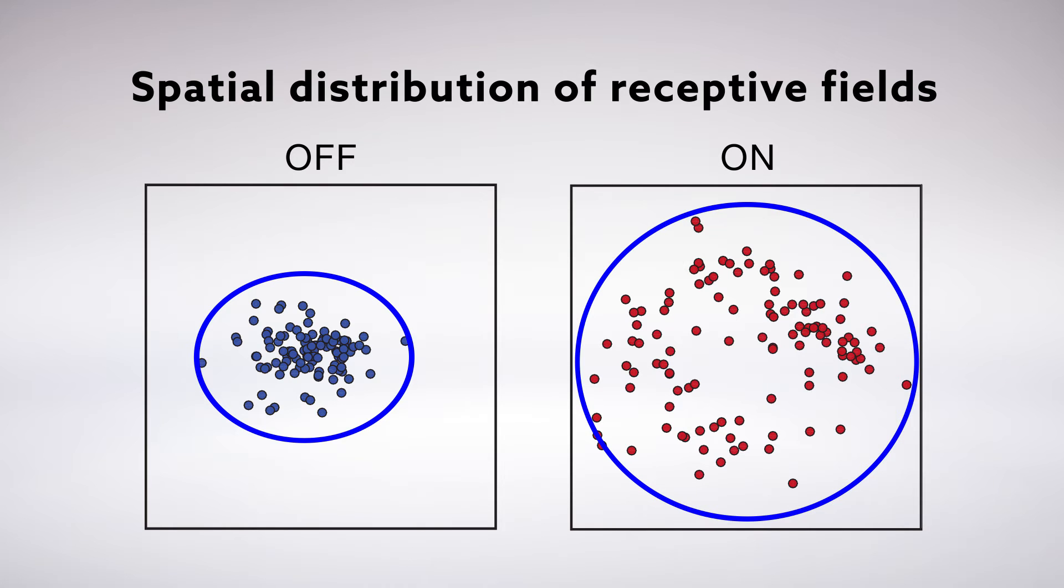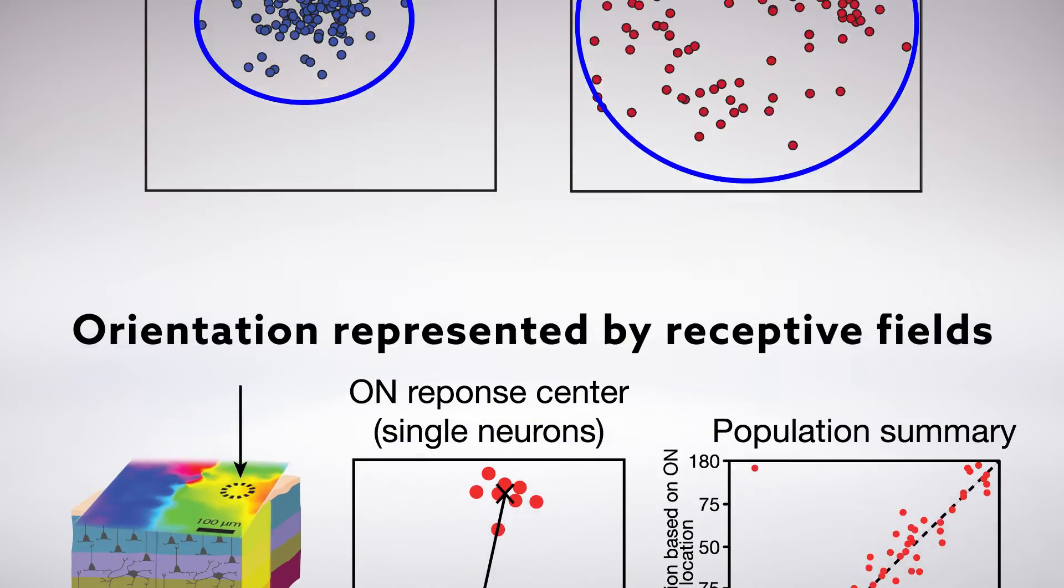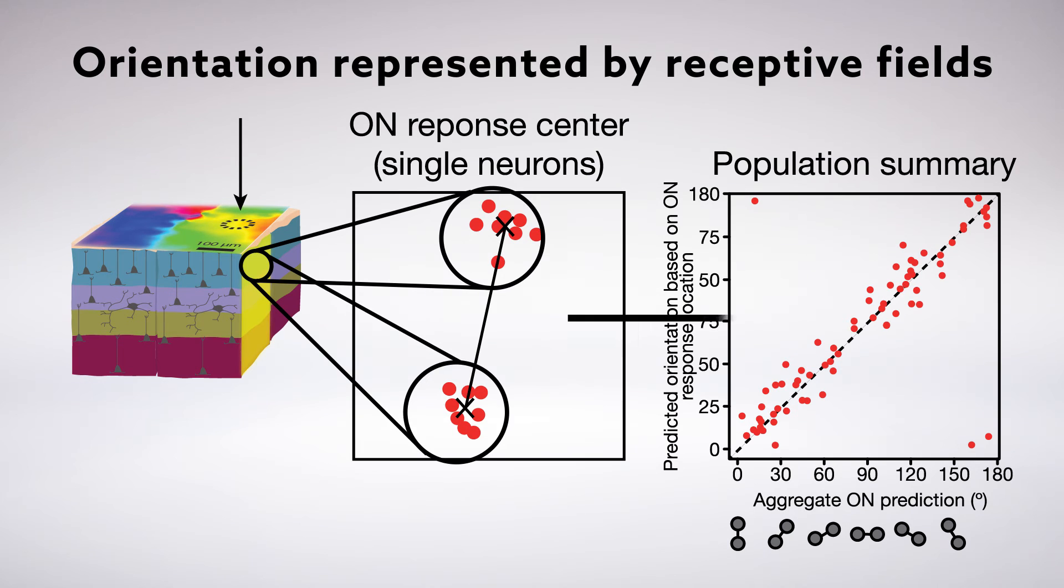But that didn't mean there wasn't an underlying organization. The researchers found that these seemingly disordered on responses were actually highly structured, not for location, but for orientation.